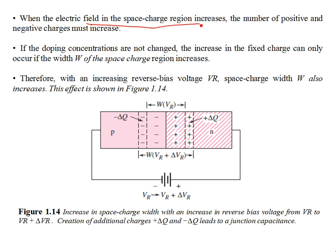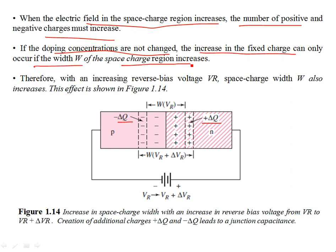When the electric field in the space charge region increases, the number of positive and negative charges must increase. The doping concentrations are not changed — they stay the same. So the increase in fixed charge can only occur as the width of the space charge region increases, and that happens in the reverse biased PN junction. The widening of the space-charge region happens when the negative is connected to the P-type and the positive of the external battery is connected to the N-type.